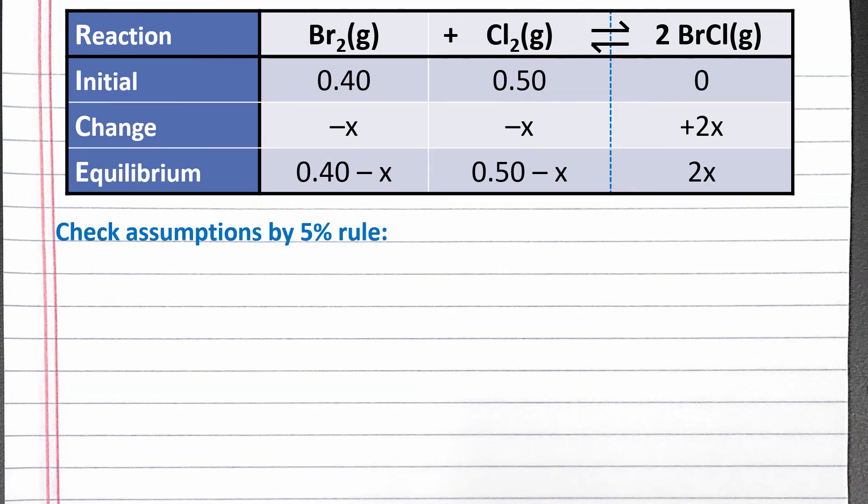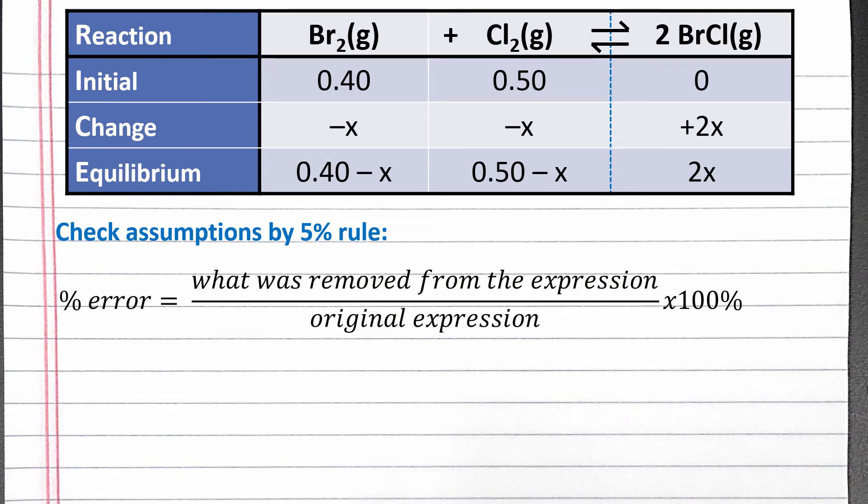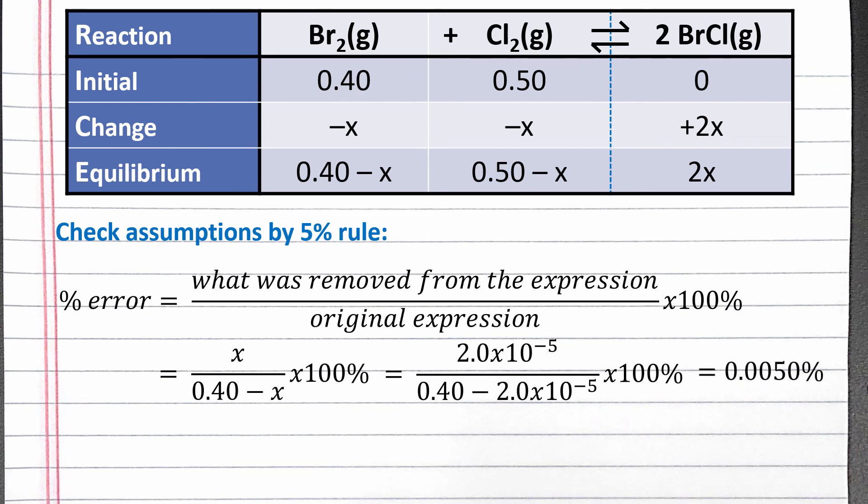We can also check our two simplifying assumptions using the 5% rule. According to the 5% rule, if we divide what we removed from the expression by the original expression and multiply by 100%, we should get a number less than 5%. Our assumption was that 0.40 minus x is about equal to 0.40, so we removed x from the expression. This goes in the numerator. Our original expression was 0.40 minus x. This goes in the denominator. If we substitute in the value of x we calculated based on our assumptions, we will get an error of 0.0050 percent. This is far below 5%, so this assumption should be valid.